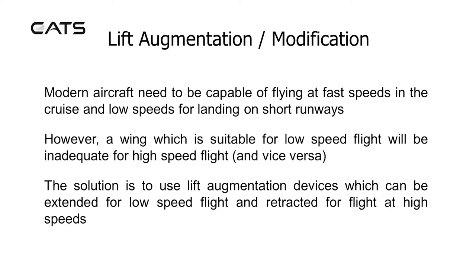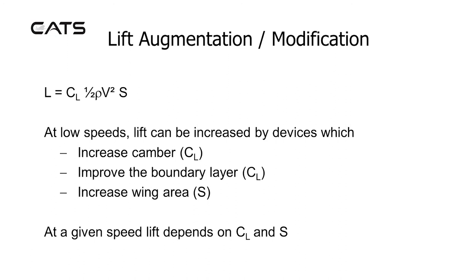Lift augmentation modification. Modern aircraft need to fly at fast speeds in the cruise and low speeds for landing on short runways. A wing suitable for low speed flight is inadequate for high speed flight and vice versa. The solution is to use lift augmentation devices which can be extended for low speed flight and retracted for high speeds. Lift = CL × ½ρV²S. At low speeds, lift can be increased by devices which increase camber (CL), improve the boundary layer (CL), or increase wing area (S).